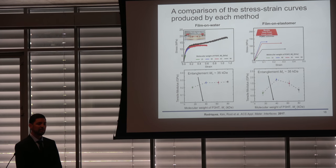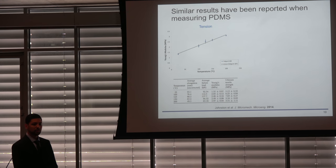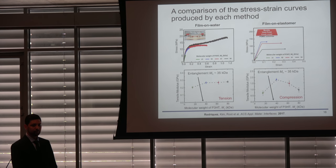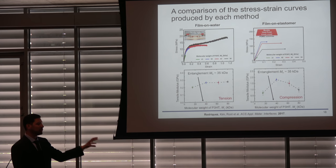We hypothesized that the main contributor to these differences is the mode of loading. In the film-on-water technique, films are under tension as they're pulled apart. In film-on-elastomer techniques, films are compressed by releasing the pre-strain. This behavior has been shown before, and technically the film-on-elastomer measurement should be labeled a compressive modulus, though since its inception in the literature it has been called the tensile modulus. That's why we display it as such, but to be precise, it is a compressive modulus.